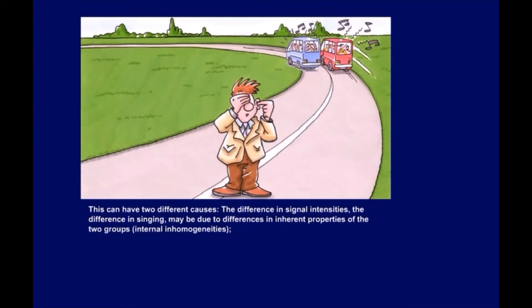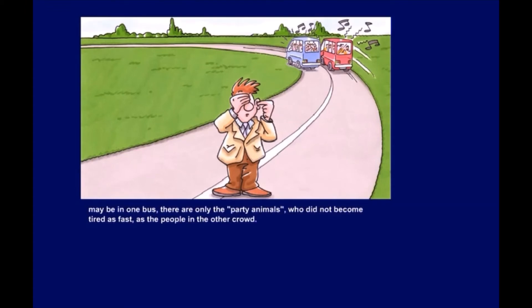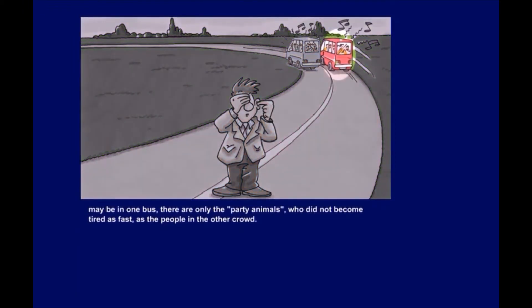This can have two different causes. The difference in signal intensities, the difference in singing, may be due to differences in inherent properties of the two groups, internal inhomogeneities. Maybe in one bus, there are only the party animals, who did not become tired as fast as the people in the other crowd.